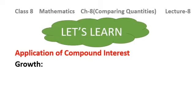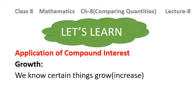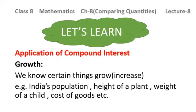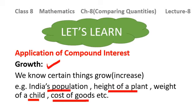The very first application of compound interest is growth. We know that certain things grow or increase — for example, India's population is increasing, the height of a plant keeps on increasing, the weight of a child increases, and the cost of goods also increases.